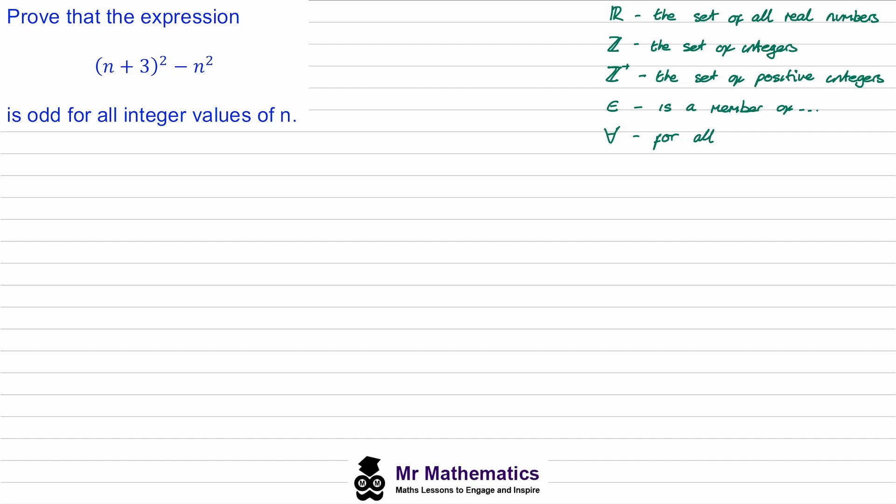The first thing we're going to do is expand out this (n + 3)² by multiplying n + 3 by itself, then we'll take away the n² term. We'll expand out these brackets so we get n² + 3n + 3n + 9 minus this n² term. You can see the n² will cancel, and we can collect these n terms together to give us 6n and then plus 9.